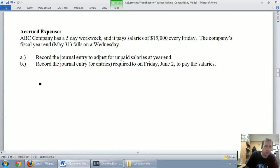It says record the journal entry to adjust for unpaid salaries at year end. So we're going to do a journal entry on May 31st. We've got salaries, that's an expense, that's a cost that's built up over time but we haven't paid it yet. Our year end is Wednesday, we're going to pay it on Friday. So that seems to fit the bill of an accrued expense.